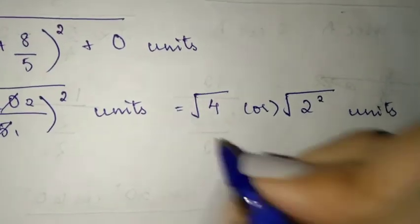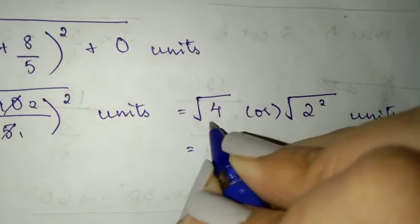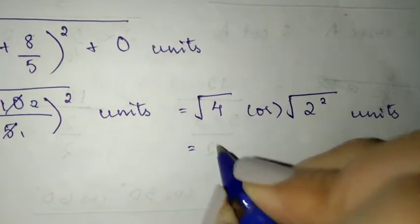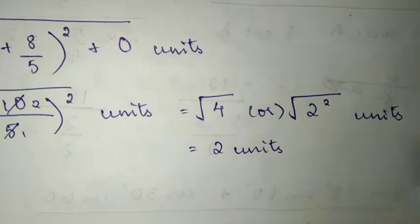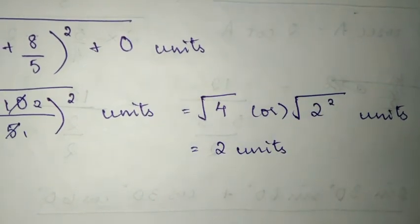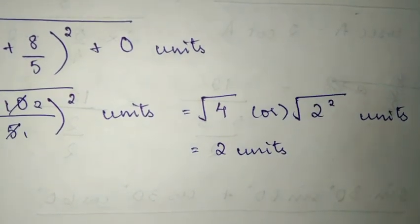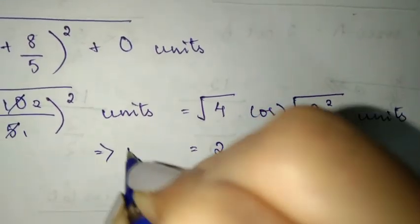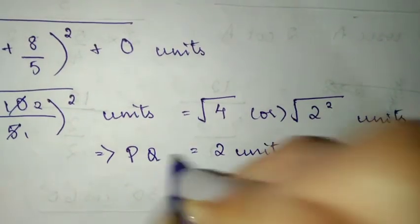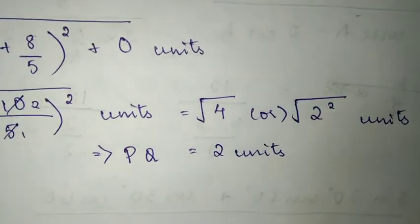Root over 2 squared is root over 4, which equals 2. So the distance between the 2 points P and Q is 2 units. This is the final answer.